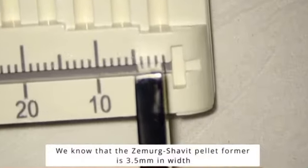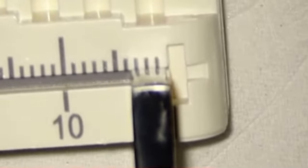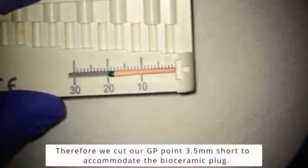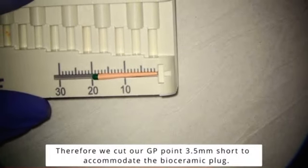We know the width of the pelletformer is 3.5 millimeters. Therefore, we take our custom GP point and cut 3.5 millimeters off the end.